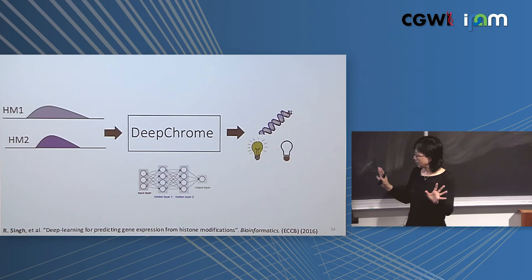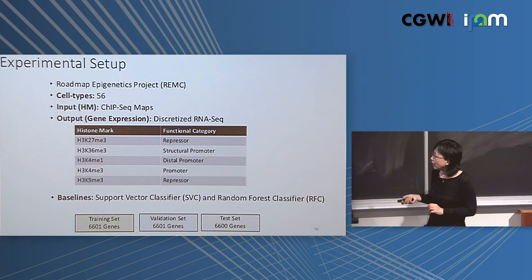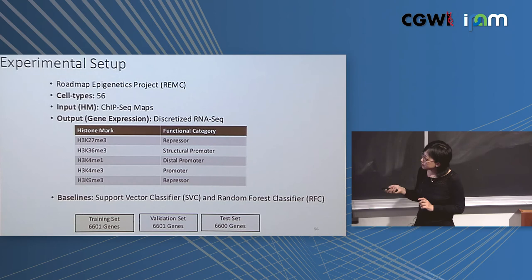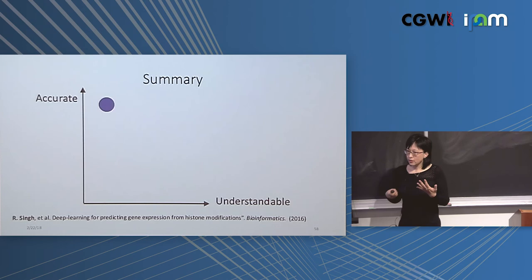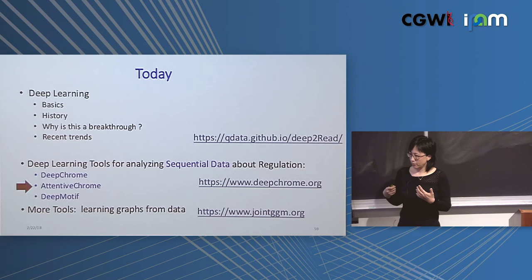For DeepChrome, we train on 56 different cell types using a train/validation/test split of 6,000/6,000/6,000 genes. Performance is better than support vector machines and random forest. However, this is an accurate model but not very easy to interpret. This led us to develop the second model, AttentiveChrome.